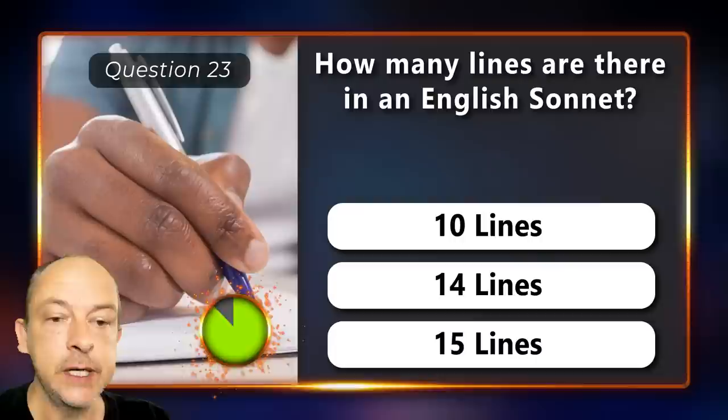How many lines are there in an English sonnet — 10, 14, or 15 lines?